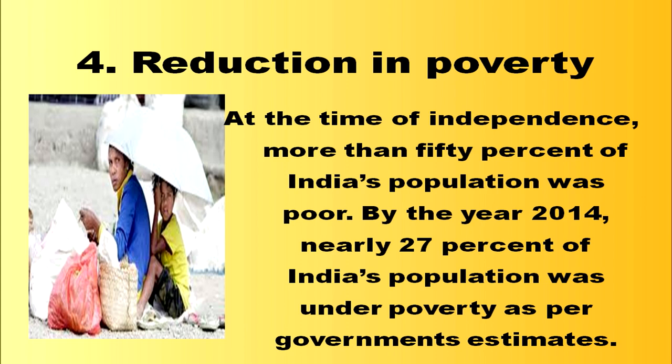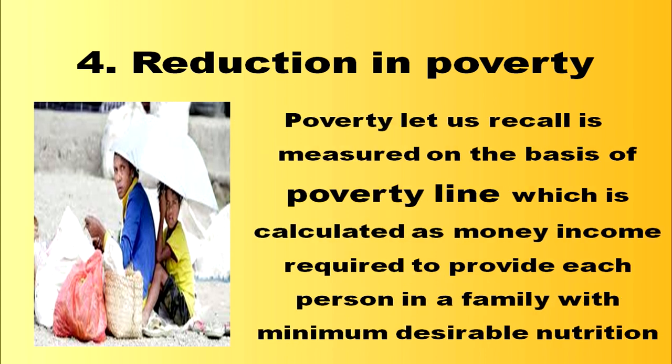The fourth objective has been reduction in poverty. At the time of independence, more than 50 percent of India's population was poor; by 2014, nearly 27 percent was under poverty. Poverty is measured on the basis of the poverty line, calculated as the money income required to provide each person with minimum desirable nutrition — fixed at 2400 kilocalories in rural areas and 2100 kilocalories in urban areas.